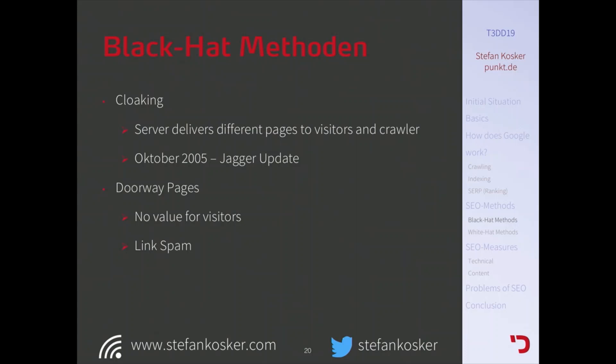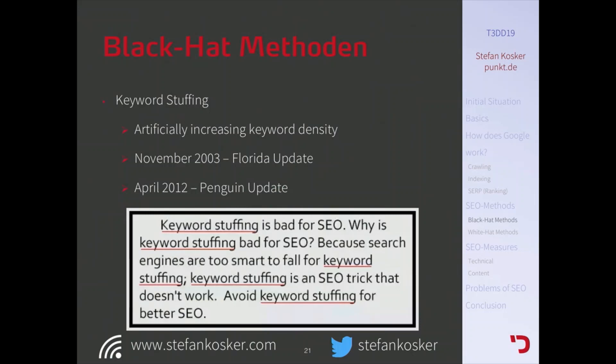The second is doorway pages, always used together with cloaking. The idea is you have a search-engine-optimized page with lots of links going to, for example, 100 different casino websites — generating new users for different websites. Keyword stuffing, which we already talked about, involves artificially increasing keyword density. Since 2012 it doesn't work well, due to the Penguin update where Google started looking not only for keywords but also the context of the keyword and the words around it.